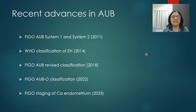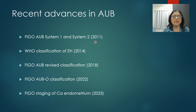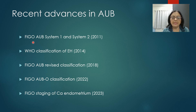The first introduction of the PALM-COEIN classification system took place in 2011. It is called FIGO AUB System 1 and System 2. FIGO is the International Federation of Gynecology and Obstetrics, which is the apex body that introduced this new classification system to clinically evaluate and treat patients.